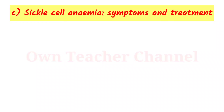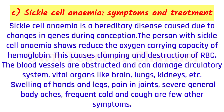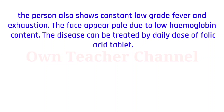Sickle Cell Anemia: it is a hereditary disease caused due to changes in genes during conception. The person shows reduced oxygen-carrying capacity of hemoglobin, causing clumping and destruction of RBCs. Blood vessels are obstructed, damaging the circulatory system and vital organs like the brain, lungs, and kidneys. Symptoms include swelling of hands and legs, pain in joints, general body aches, frequent cold and cough, constant low-grade fever, exhaustion, and pale face due to low hemoglobin. The disease can be treated by a daily dose of folic acid tablets.